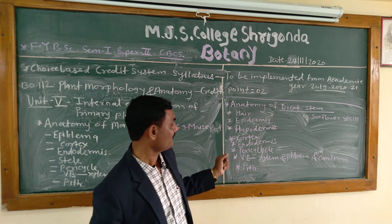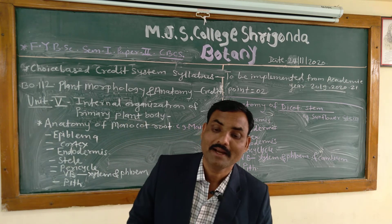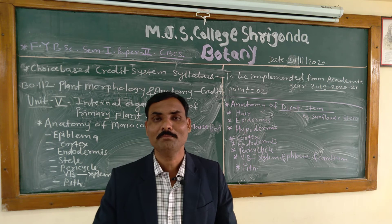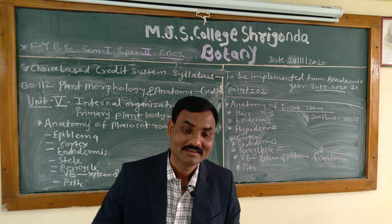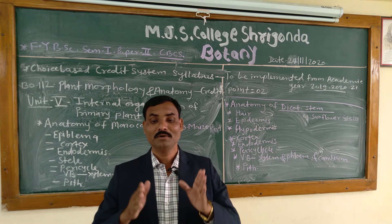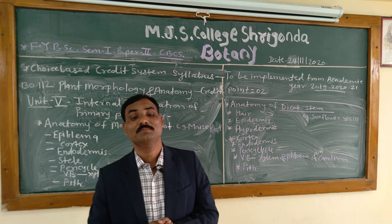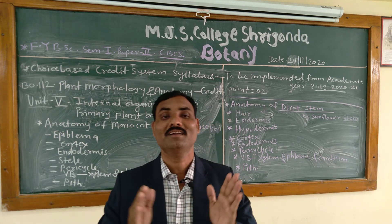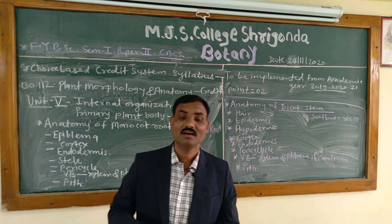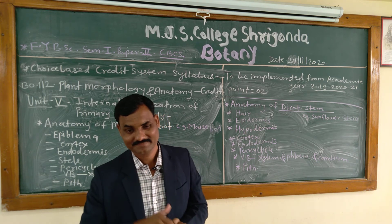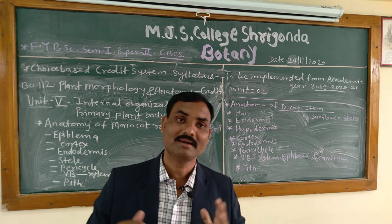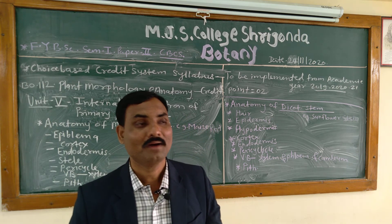The pericycle is made up of alternate bands of parenchymatous and sclerenchymatous cells. Sclerenchymatous tissue is found in the form of crescent-shaped patches in between the endodermis and phloem bundles — a very important characteristic feature of the pericycle. Parenchymatous burst cells provide mechanical support to the plant parts.